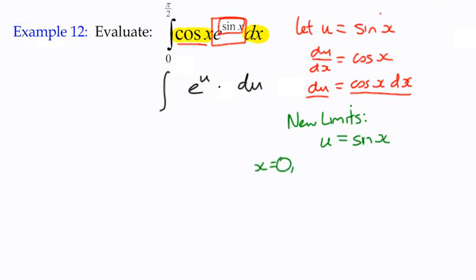The first one is 0. So when x is 0, u is equal to the sine of 0. The sine of 0 is 0. So we've still got 0 as our lower limit. When x is pi over 2, our value of u becomes the sine of pi over 2, which is 1. So our new limits, our lower limit is 0, and our upper limit is now 1.